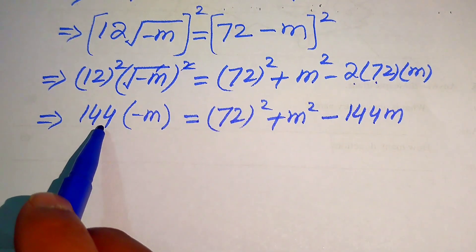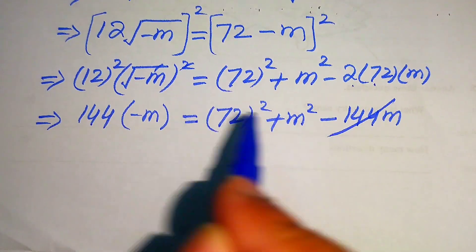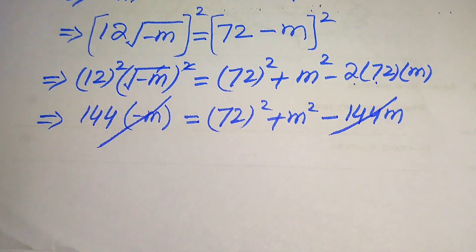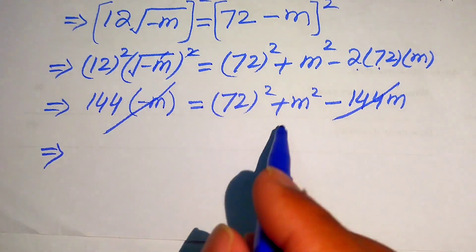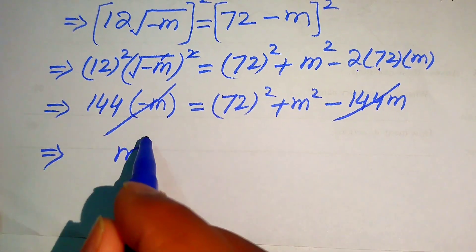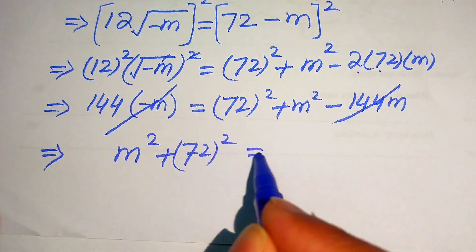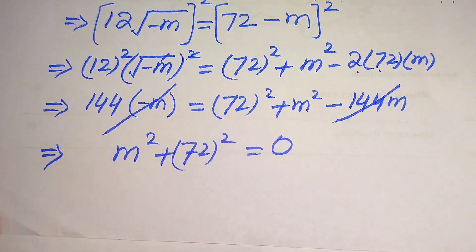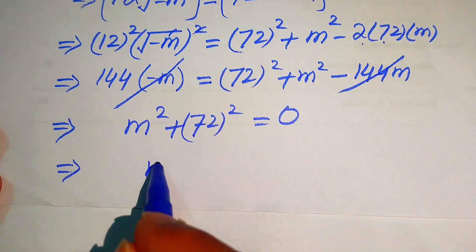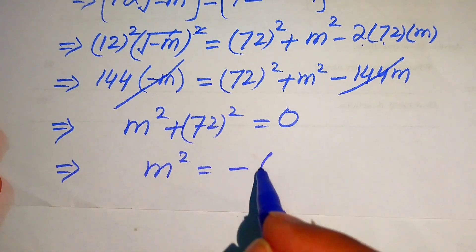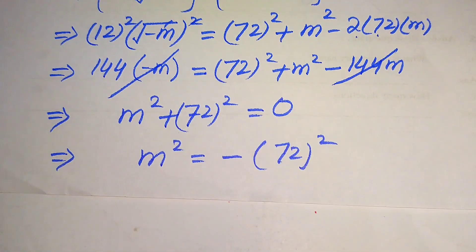Now you see that minus 144m appears on both sides, so those terms cancel each other out. The remaining values are m squared plus 72 squared equals to 0. We move plus 72 squared to the right hand side and it becomes m squared equals to minus 72 squared.